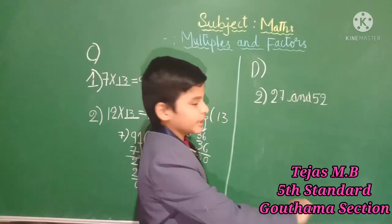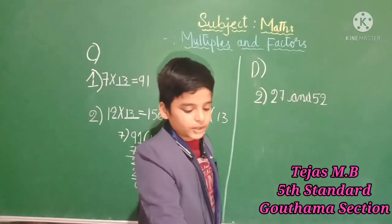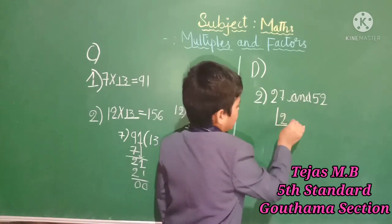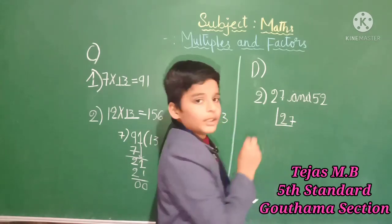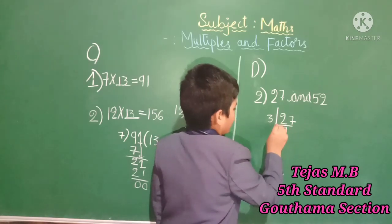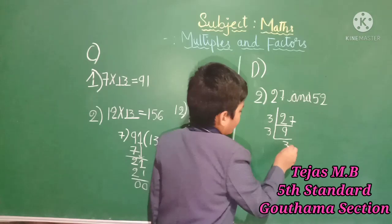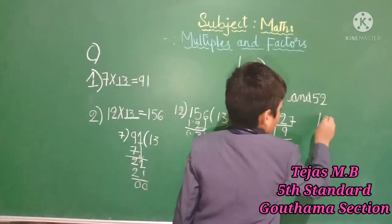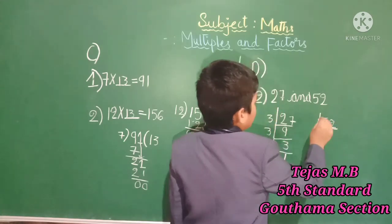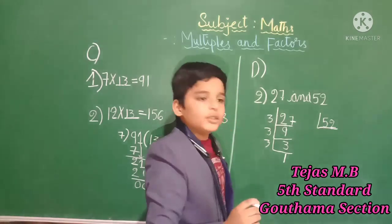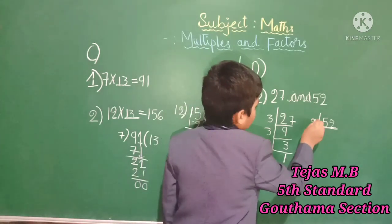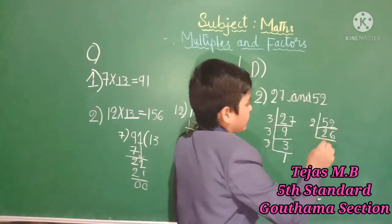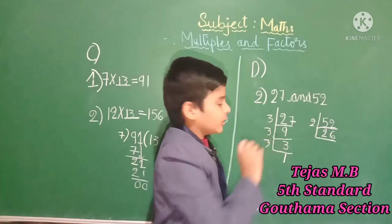Then let us go to the second problem: Write three common factors for 27 and 52. Let us do the problem. For 27: 3 times 9 is 27, 3 times 3 is 9, 3 times 1 is 3. For 52: 2 times 26 is 52. The factors are listed out. The common factors of 27 and 52, except 1, are to be identified from both lists.